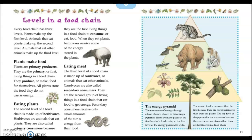The energy pyramid shows the movement of energy through a food chain. There are many plants at the first level, so the first level of the energy pyramid is wide. The second level is narrower than the first because there are fewer herbivores than there are plants. The top level is the narrowest because there are fewer carnivores than there are herbivores in a food chain.